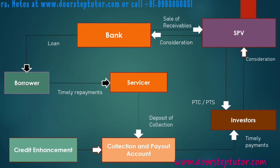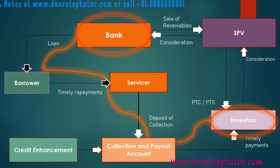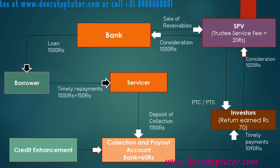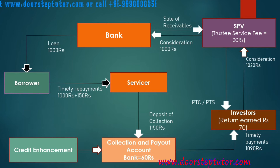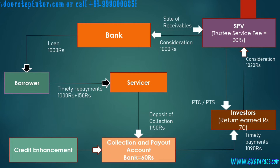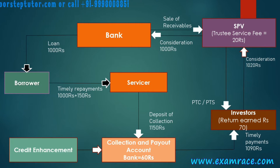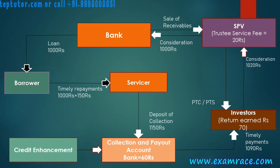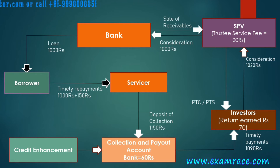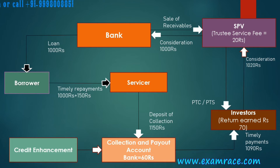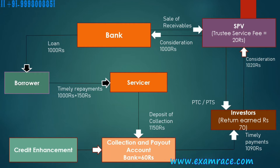Let us take an example. If a borrower took a loan of rupees 1000 and is paying an EMI of 150, there are many borrowers — not just one. The total amount of loans lent by a bank in a year across thousands of borrowers sums up to 1000 rupees, and the EMI the bank earns on it is 150 rupees. So the total amount of 1150 is deposited in the collection and payout account.